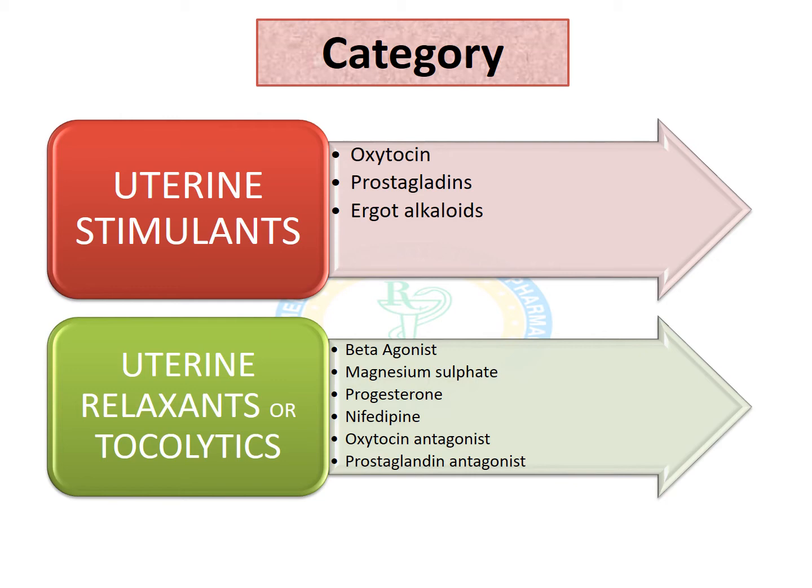Under tocolytics, we have a lot of drugs like beta agonists, magnesium sulfate, progesterone, and calcium channel blocker nifedipine. Then we have the uterine stimulant antagonists like oxytocin antagonist and prostaglandin antagonist.